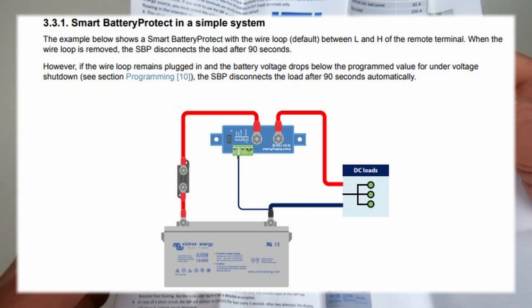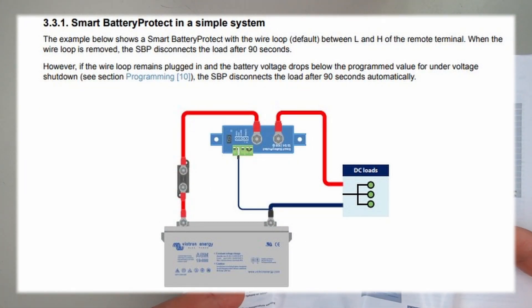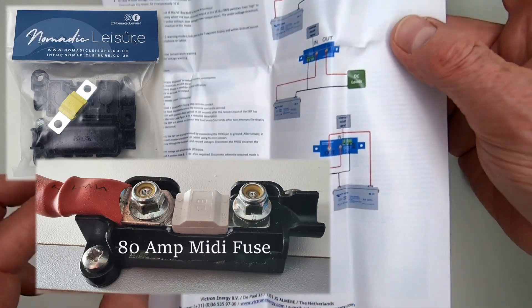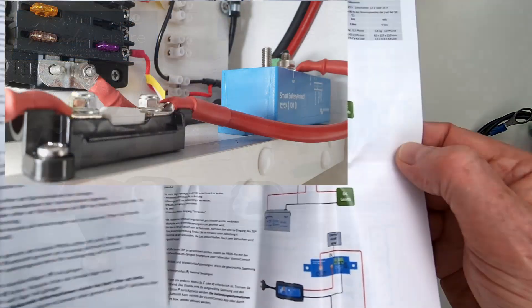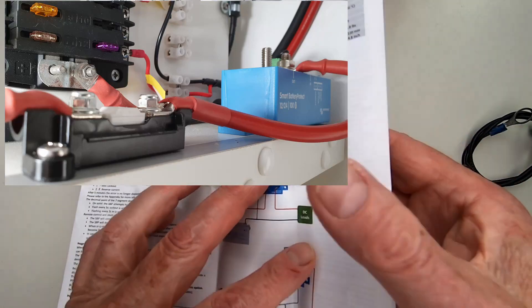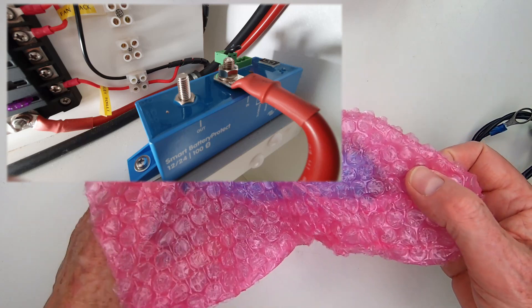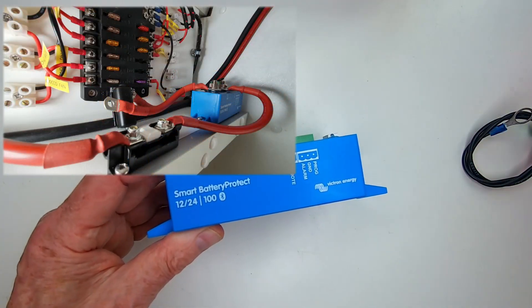I went for the simplest install with the live lead directly from the batteries redirected via an 80A midi fuse to the input connector on the battery connect. Whilst just over Victron's recommended 50cm from the battery, the wire is welding grade thickness as is the earth cable, so there's no real voltage loss.